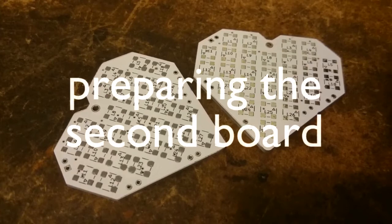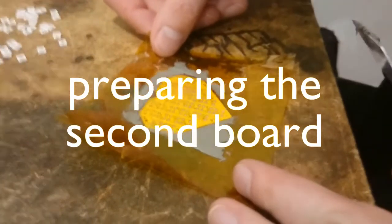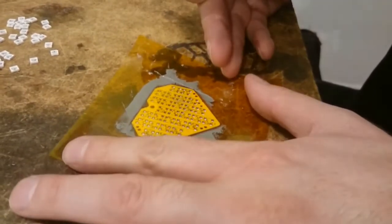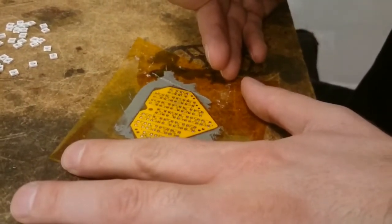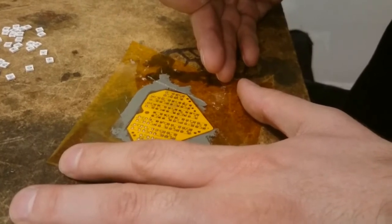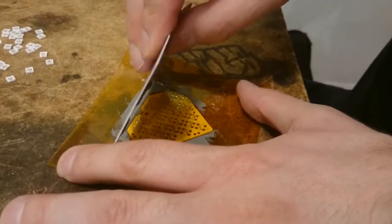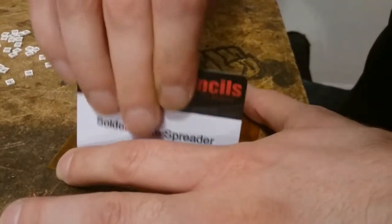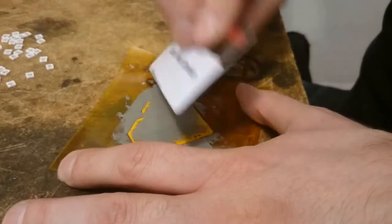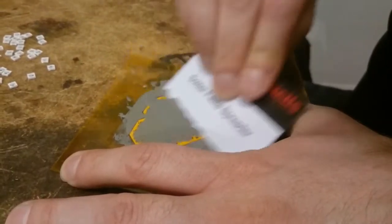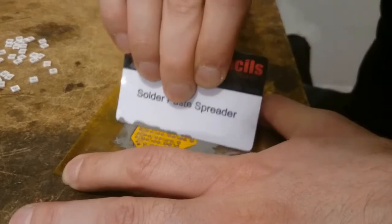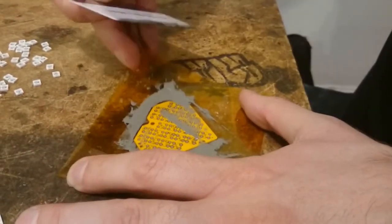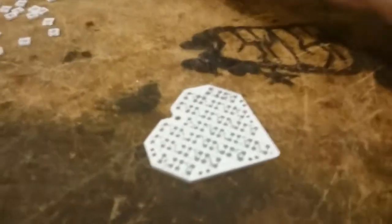Time to do the second board. Once again, we align the stencil. Once again we screw up the stencil alignment, and try again, and we have it. And now I just take the paste that's already on the spreader, re-spread, wipe it around a bit, pick up some of the excess, wipe it around a bit more, and it looks like we're done. So, peel off the stencil, and now we're ready to pick and place.